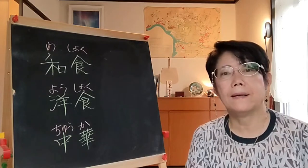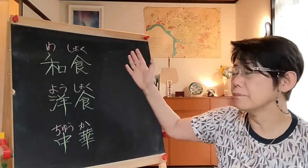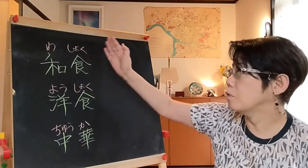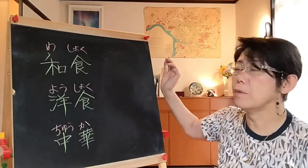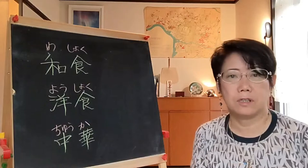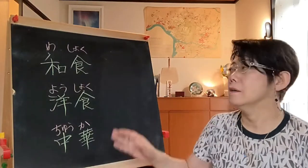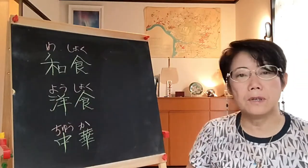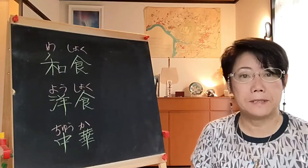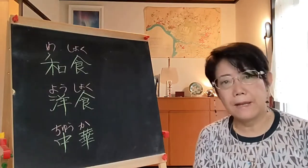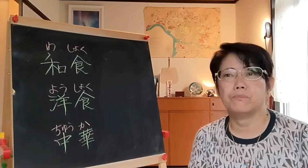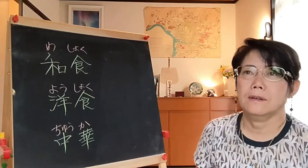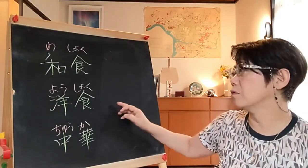In Japan, we have three categories for cuisine. Washoku is Japanese cuisine like tempura, sushi, and yakitori — they all belong to washoku. Youshoku is Western food like pizza, pasta, Italian, French, American, British, and Spanish cuisine — they all belong to youshoku.